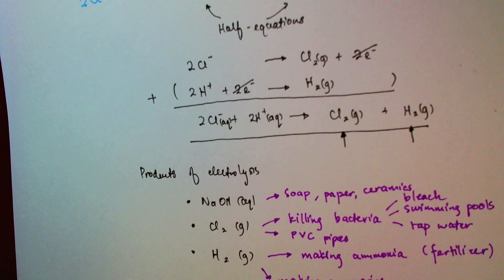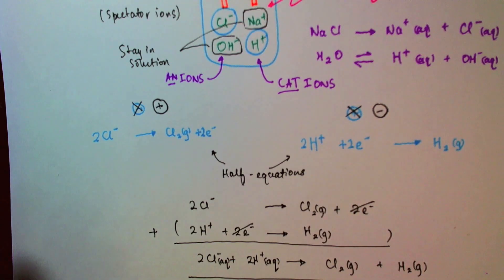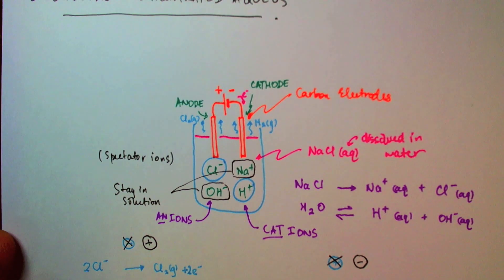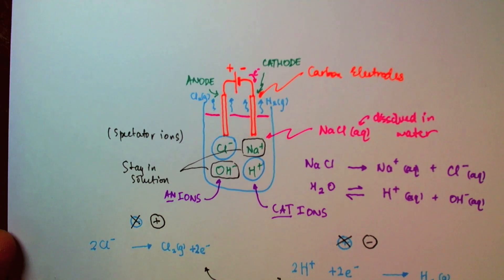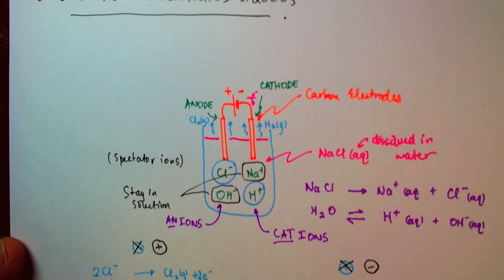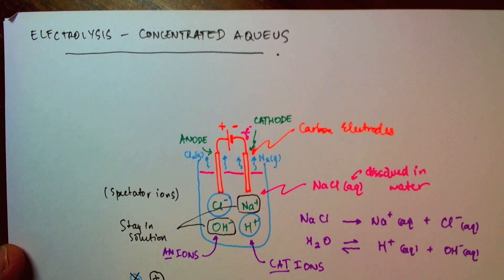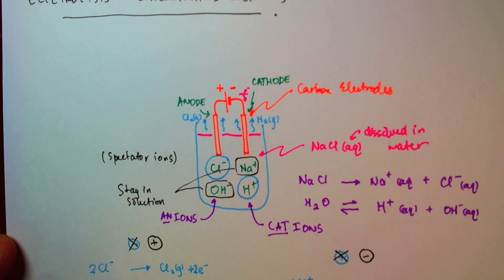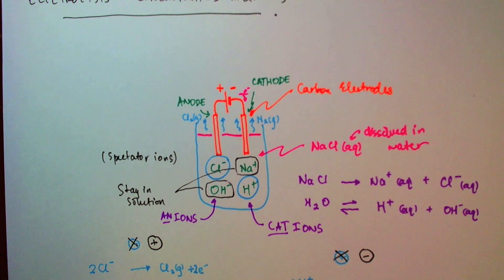So we see that electrolysis does have its useful practical applications. In the next video, I'll be doing one other example of the electrolysis of an aqueous substance, and that would be the electrolysis of concentrated hydrogen chloride.